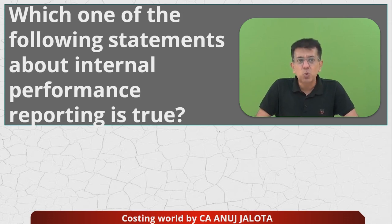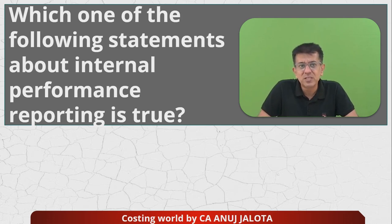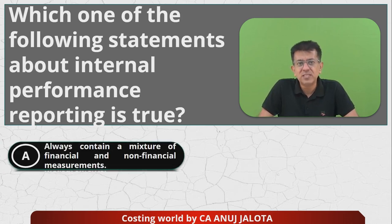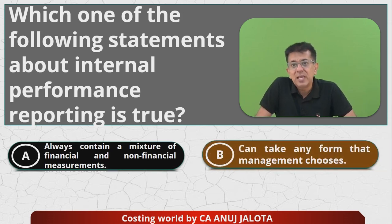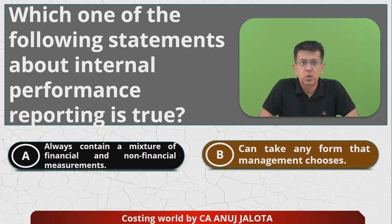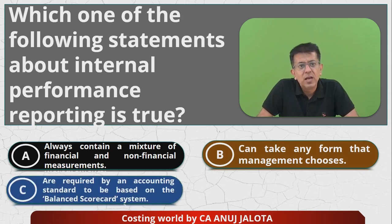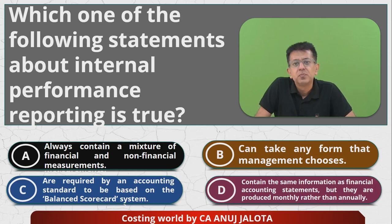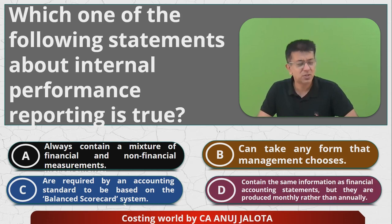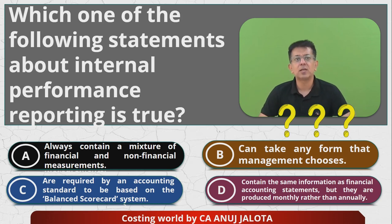Which of the following statements is true about internal performance reporting? The four options are: A — always contains a mix of financial and non-financial measures; B — can take any form that management chooses; C — is required by an accounting standard to be based on a balanced scorecard system; and D — contains the same information as financial accounting but is produced on a monthly rather than annual basis. This question is quite simple — common sense — so I guess you can comment below the correct answer.